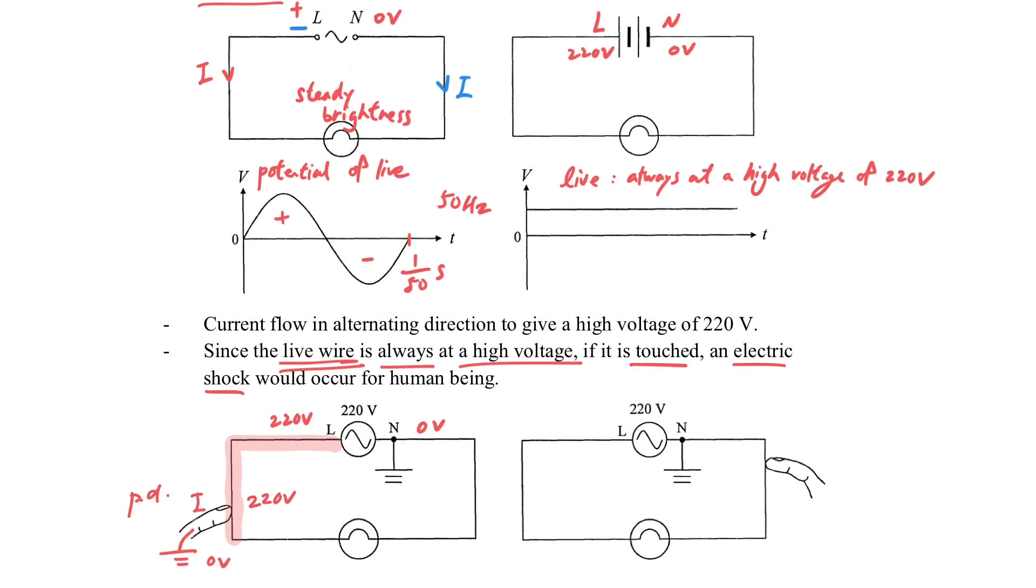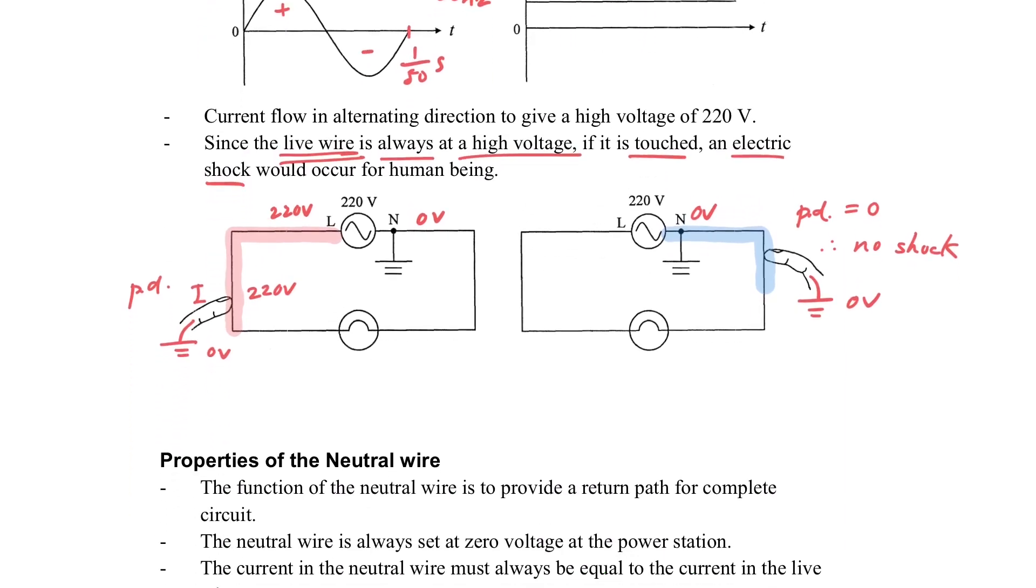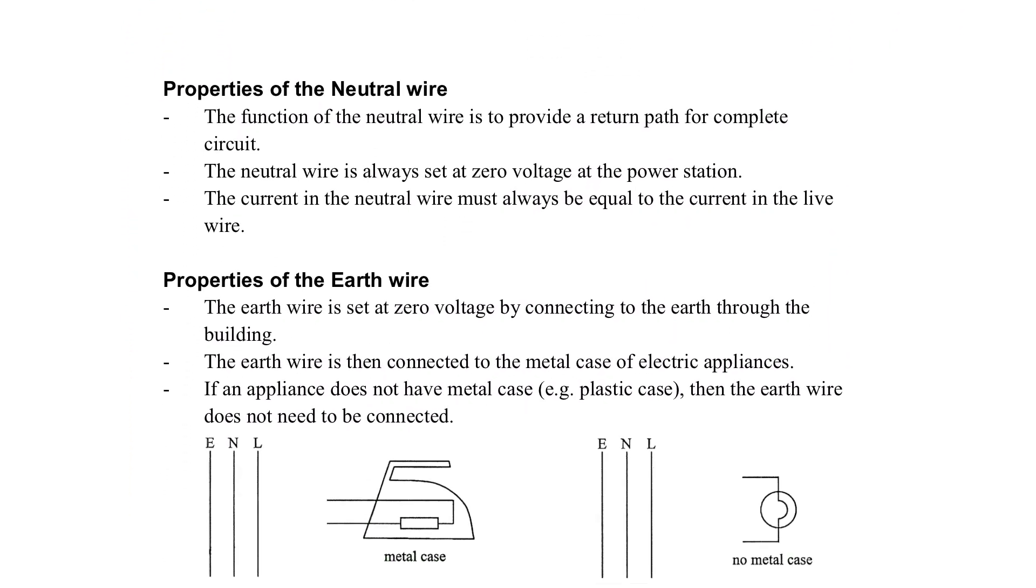This potential difference across our body will give us an electric shock. So that's why, if we are touching the ground at the same time we're touching the live wire, then we may get shocked. However, if we touch on the neutral wire, it is another case because the neutral wire is already earth. It's always zero potential. The potential difference across our body is zero, so we won't get shocked.